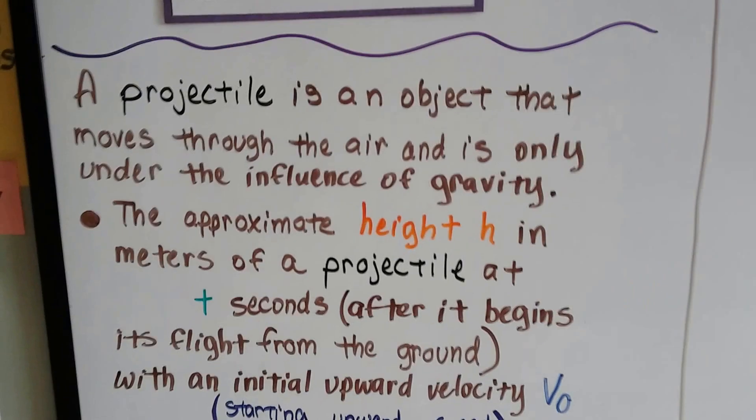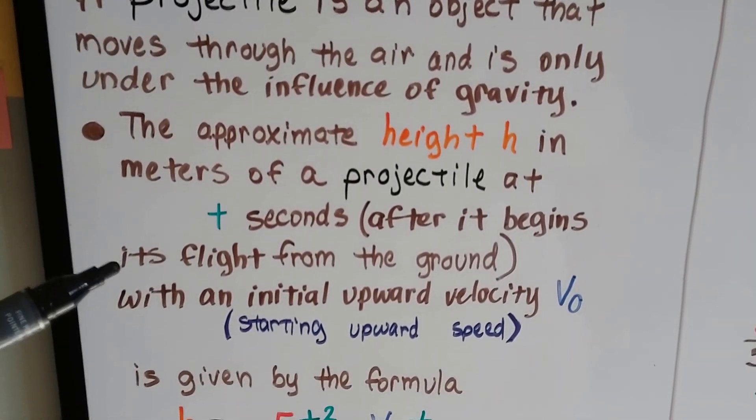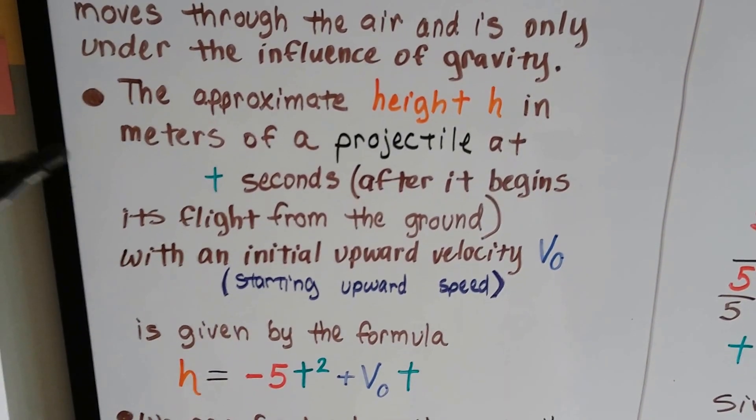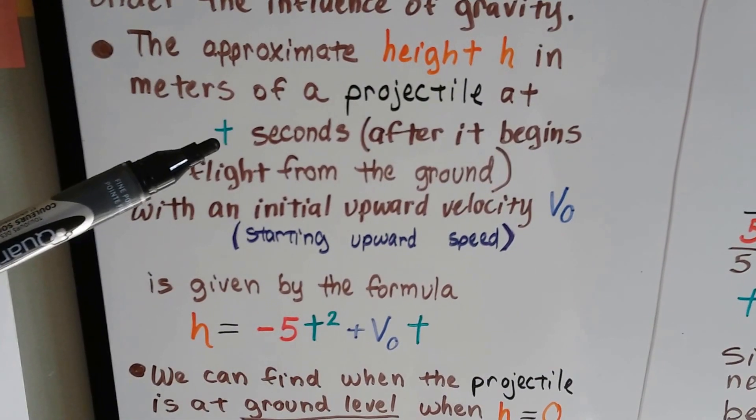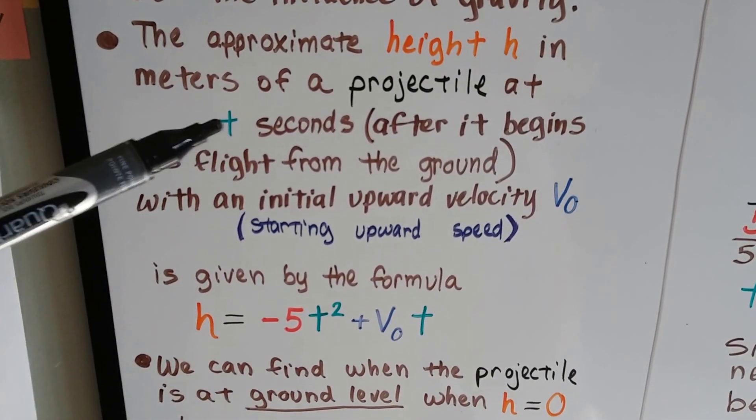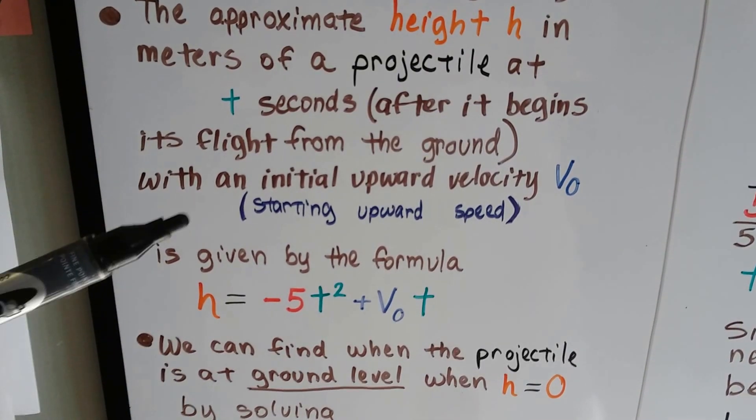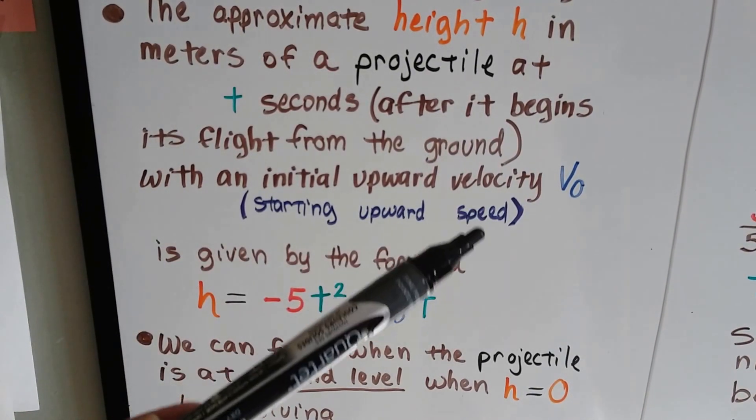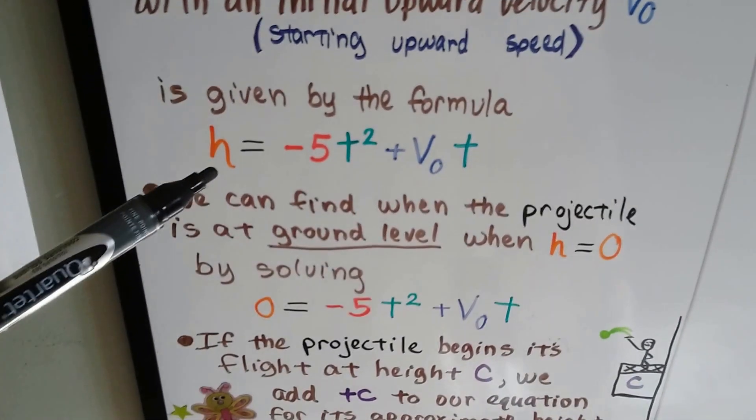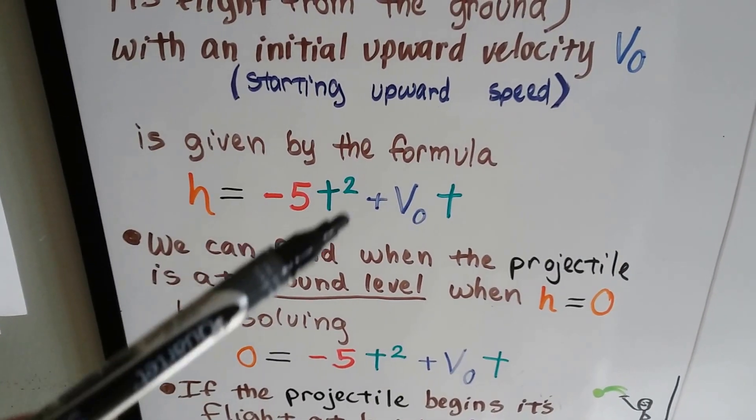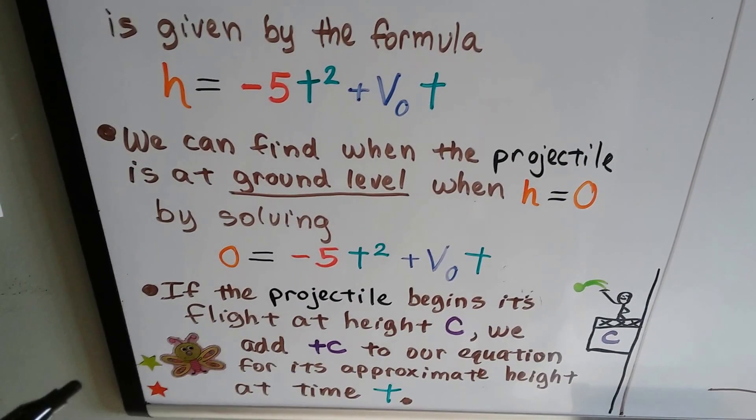We've got this projectile, this object that's moving through the air, and it's only under the influence of gravity. The approximate height h in meters of this projectile at t seconds, whatever the amount of seconds are, after it begins its flight from the ground, with an initial upward velocity, a starting upward speed of v zero, is given by this formula.